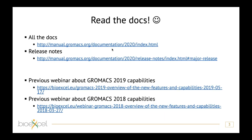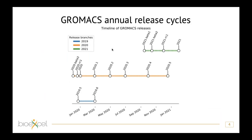With GROMACS we have extensive documentation, and that hasn't changed for the 2020 release. Basically everything I'm telling you about now you can read in our release notes for the 2020 release and also browse our manual for more details on things that have changed. I would also invite you to watch the previous webinars for the GROMACS 2019 and 2018 releases to get an idea of how we have proceeded with changes over the last few years.